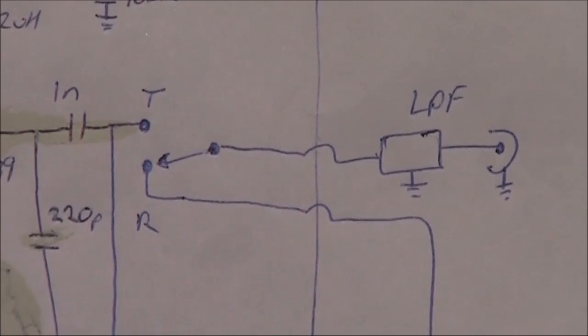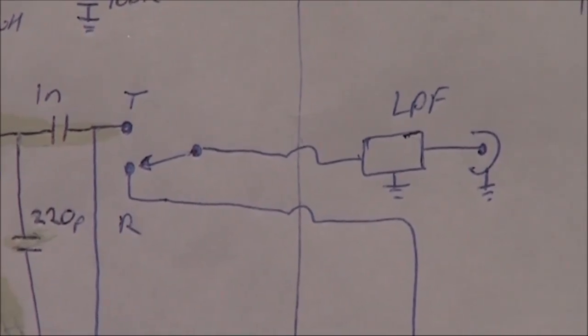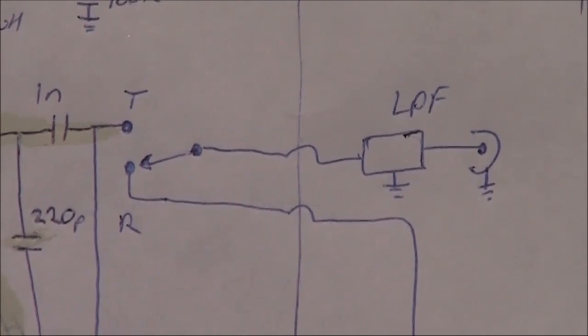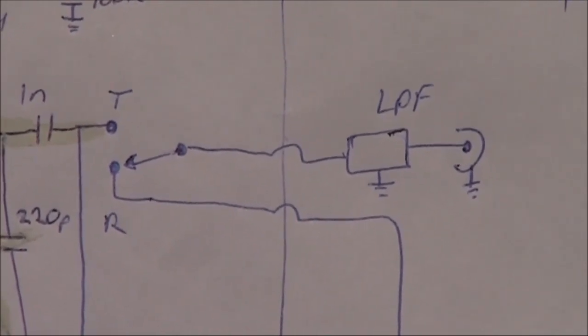It's a pi network, in fact there's two or three sections of it, and that cuts off the harmonics. You don't want them to be radiating spurious signals.